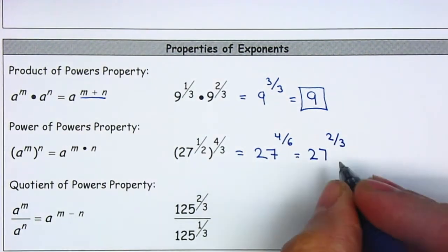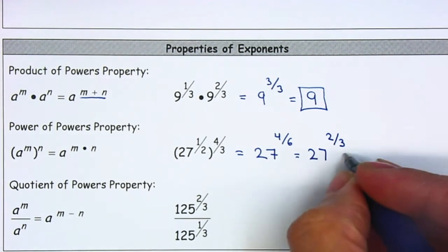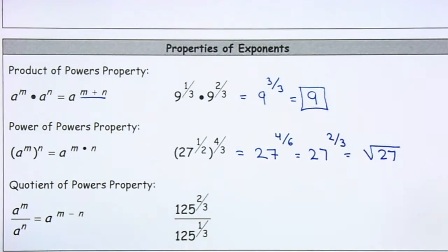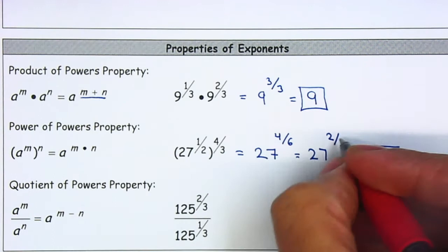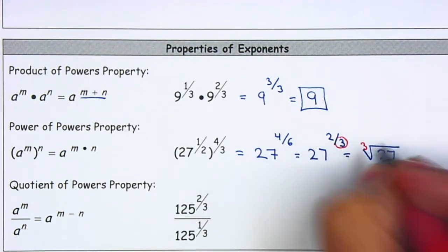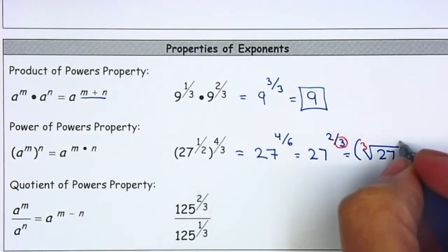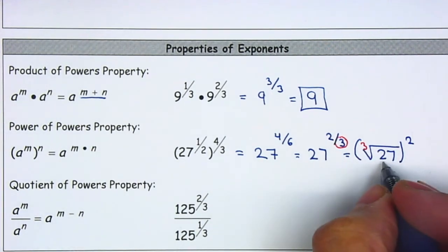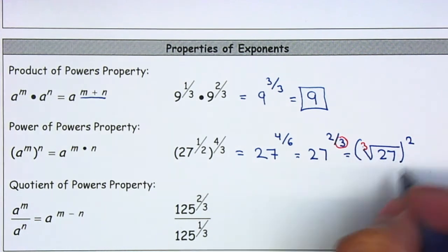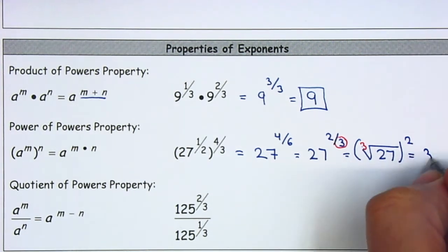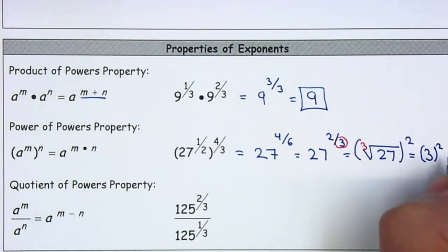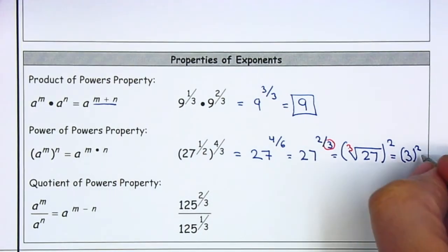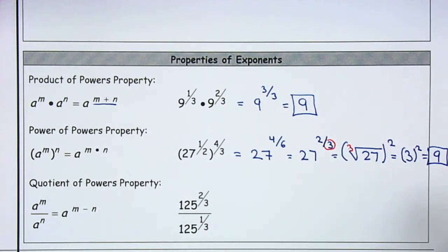Now remember, on the last section we are able to simplify this. So we're going to rewrite it as a radical: 27. This denominator for the exponent is the root, and then the 2 is the exponent. Now, the cube root of 27 — I'm looking for a number that multiplied by itself 3 times gives me 27. That'll be 3. And I still have my square. 3 squared is equal to 9. So my final answer will be 9 as well.